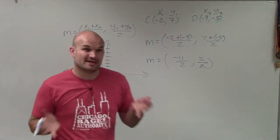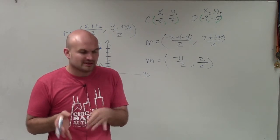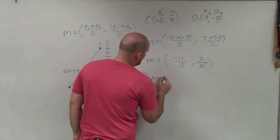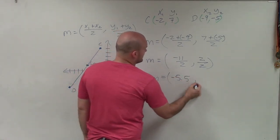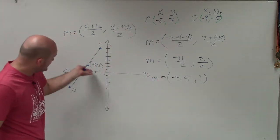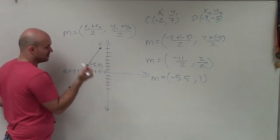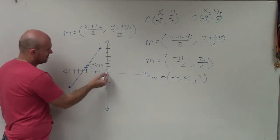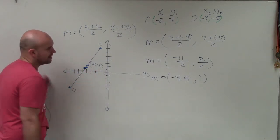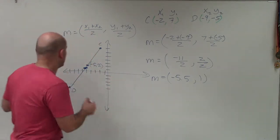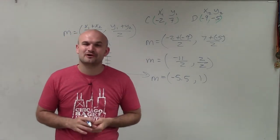Now negative 11 over 2, we can't simplify. I really don't like to leave answers in decimal form, but if you're curious, that would be negative 5.5, comma 1. Which is not too bad — I was actually pretty close. The midpoint lands right about there on the graph. So there is your exact midpoint. My estimation was a bit off, and that's why we like to use the formula. Thanks.